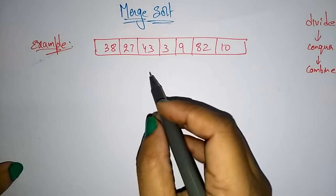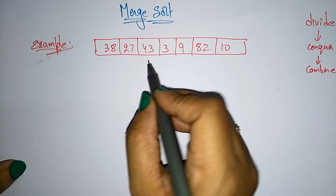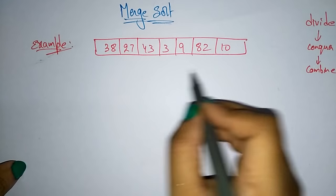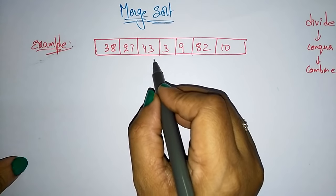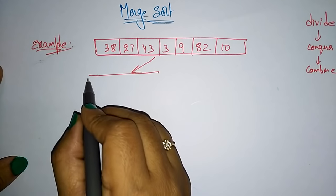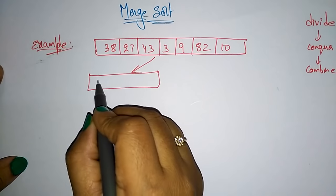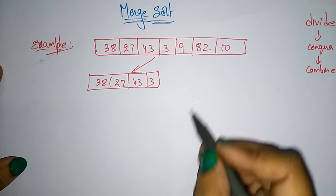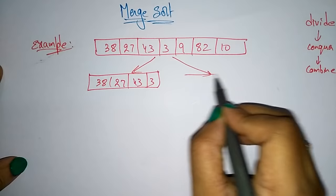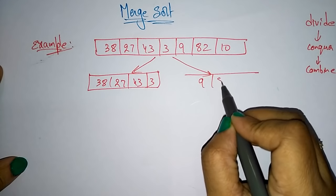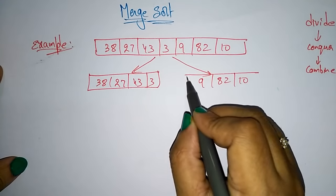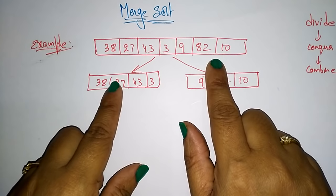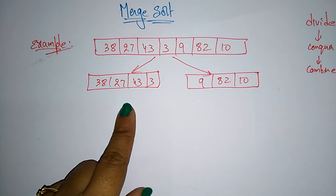So this is an array. Now I am dividing this array into two halves. This is a size of n. Now I am dividing this size of n into two halves: n by 2. So in the first half I have the elements 38, 27, 43, 3, and in the other half 9, 82, 10. So I have divided this array into two halves.